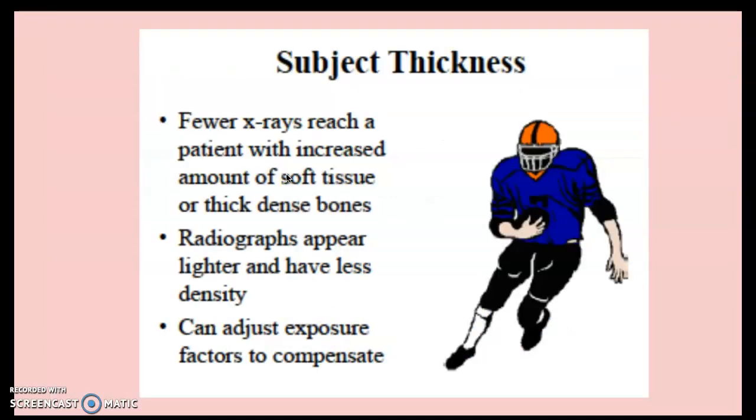Subject thickness is another influencing factor, and this is dependent on the actual patient. Fewer X-rays reach a patient who has an increased amount of soft tissue or thick, dense bone — like a football player or someone who works out a lot with a lot of muscle and very thick, dense bones. The radiograph can appear lighter and have less density, so you have to adjust the factors to compensate for the subject thickness.